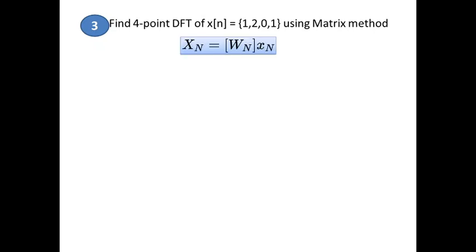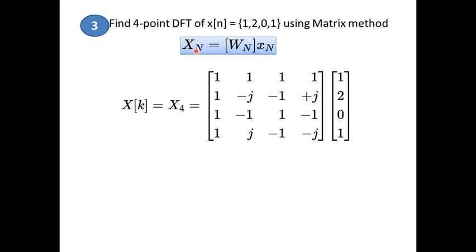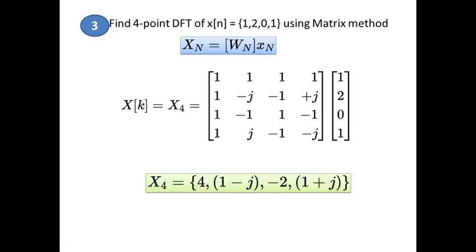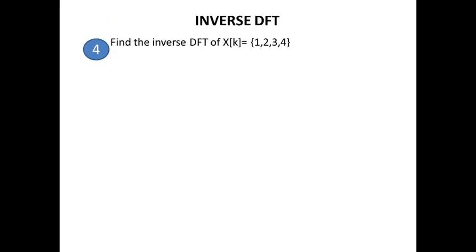Find the four-point DFT of x(n) = {1, 2, 0, 1} using the matrix method. Apply the matrix equation: multiply the 4×4 twiddle factor matrix by the input column vector. Perform normal matrix multiplication — each row multiplied by the column and summed. You will get X(k) = {4, 1−j, −2, 1+j}. These four values are the same as what you would get using the normal DFT equation.